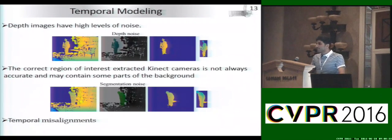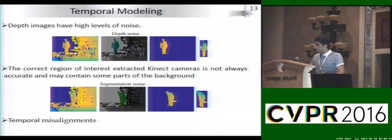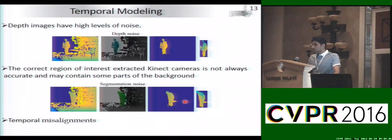The next step is temporal modeling. Many methods model the temporal variations of actions using optical flow. However, optical flow is not reliable in the presence of noise and lack of texture, which is especially the case for depth videos. Moreover, depth images captured by Kinect cameras have a high level of noise, and the region of interest containing only the human body extracted by Kinect cameras is not always accurate and may contain some part of the background. For example, part of a chair is detected as part of the human body. Therefore, we need a representation that is robust to noisy depth images, inaccurate segmentation, and temporal misalignment.